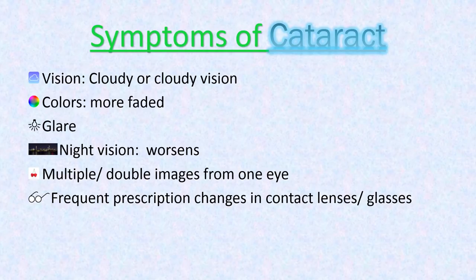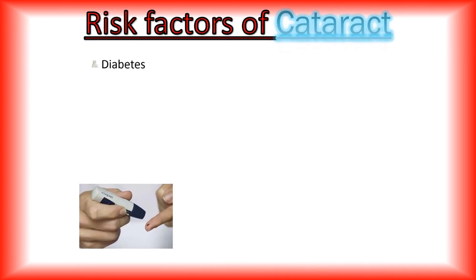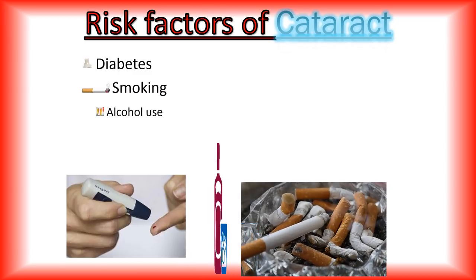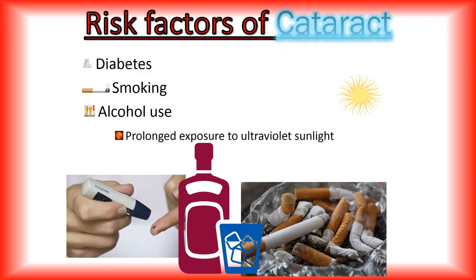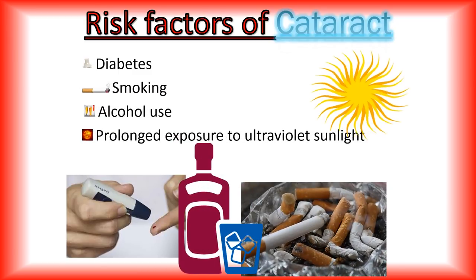Frequent prescription changes in contact lenses or glasses can also be an important sign of a cataract. Research suggests that some factors may increase the risk of developing cataract, such as diabetes, smoking, alcohol use, and prolonged exposure to UV sunlight.